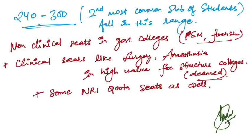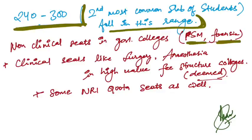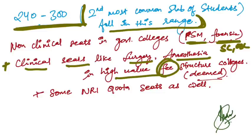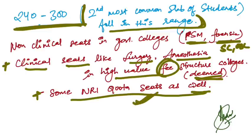If you are ranging around 240 to 300 marks, this is the second most common slab of students. You can expect non-clinical seats in government colleges like PSM and forensic, mainly for SC and OBC. Plus clinical seats like surgery and anesthesia in higher fee structure deemed colleges, and some NRI quota seats as well. You can get MS General Surgery with NRI quota seats at this range.